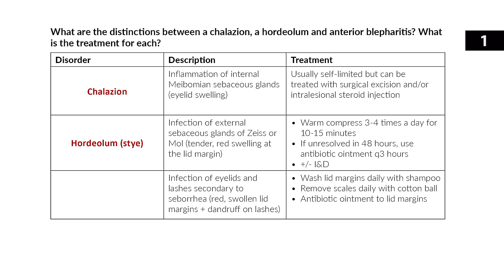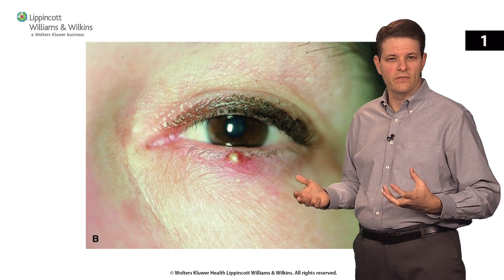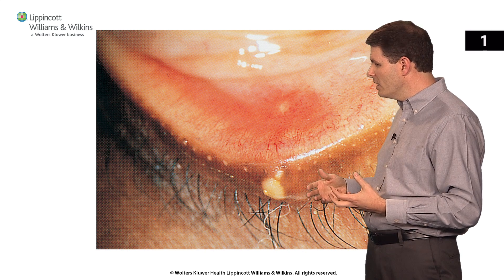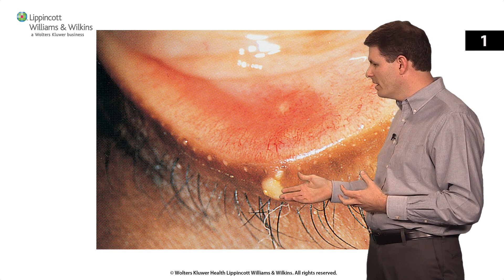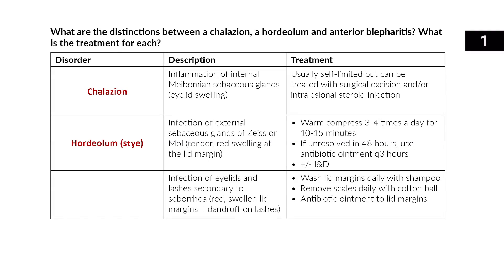Hordeolum is also known as a sty. This is an infection of the external sebaceous glands of the eyelid which results in a tender, red, swollen area at the margin or edge of the eyelid. You can see the pustule forming right on the edge of the eyelid. You treat this by applying a warm compress three or four times a day for about 10 to 15 minutes. If it doesn't resolve in 48 hours you might need antibiotic ointment or incision and drainage.